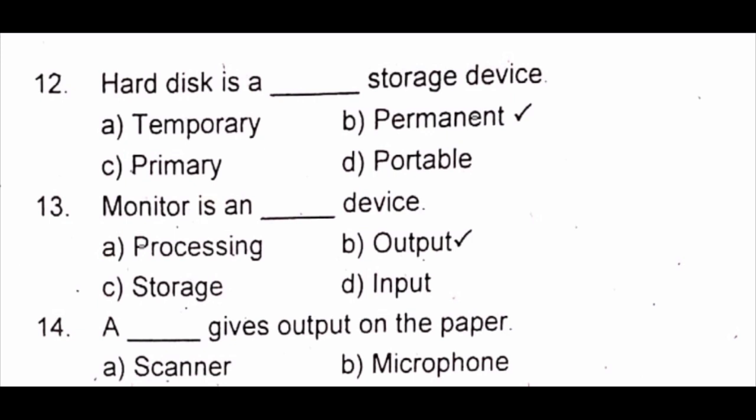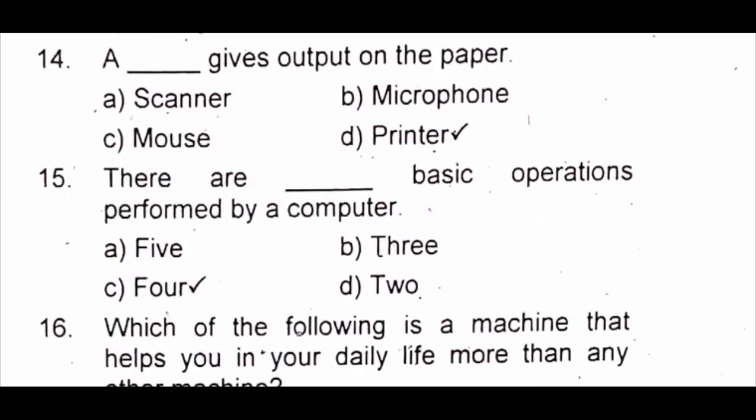Question 12: The data is a dash device. A) scanner B) microphone C) primary D) portable. The answer is B) permanent. Question 13: Monitor is a dash device. A) processing B) output C) storage D) input. The answer is B) output.